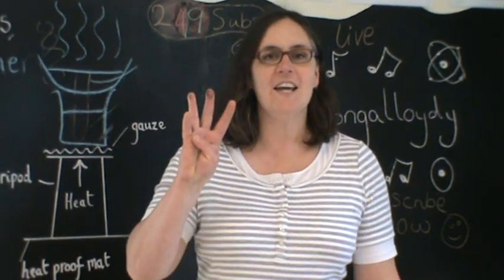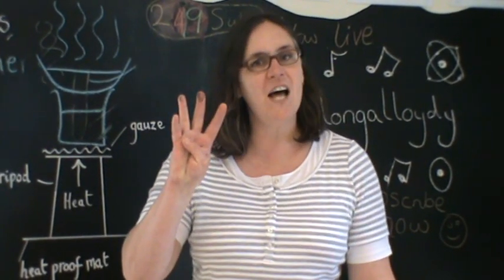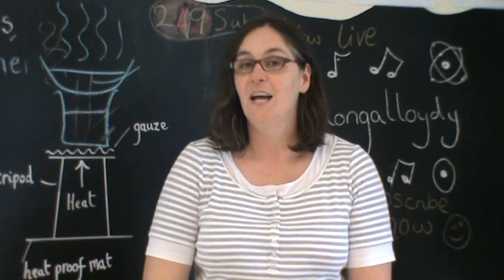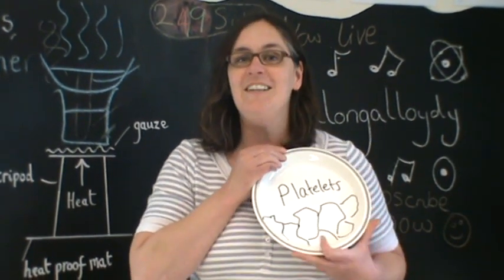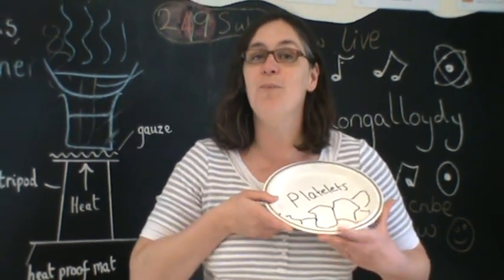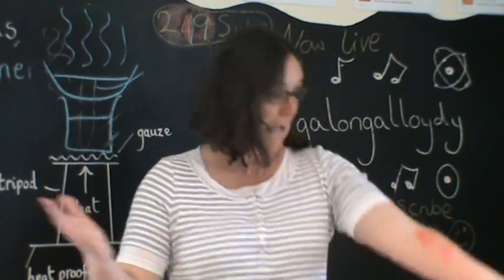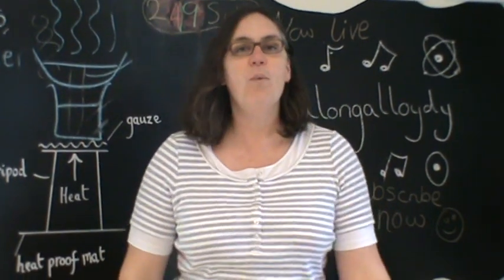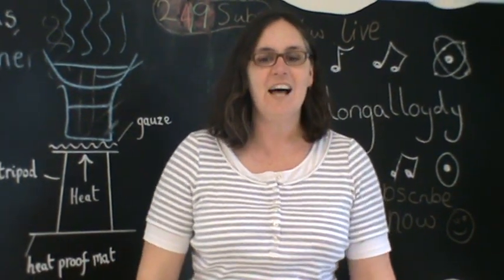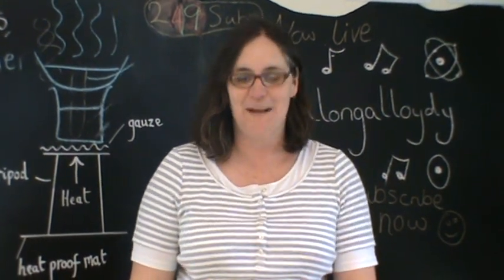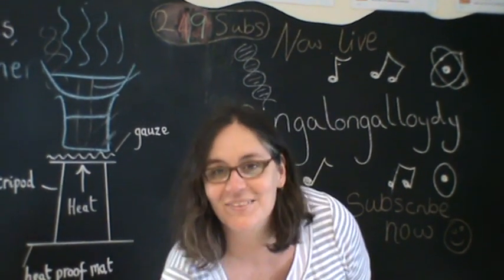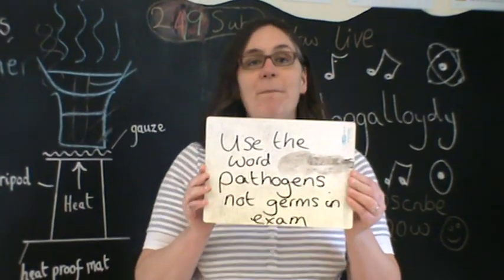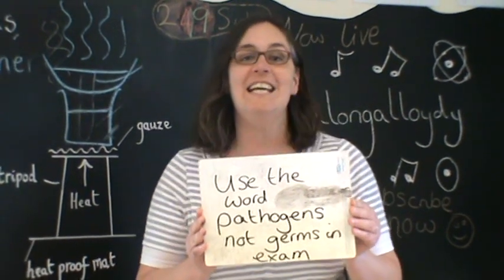Four parts make up the blood you know. Fragments called platelets clot so it don't flow. The white blood cells prevent disease by engulfing germs or make antibodies.